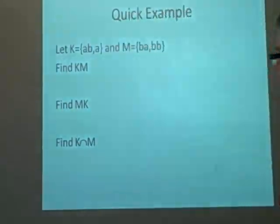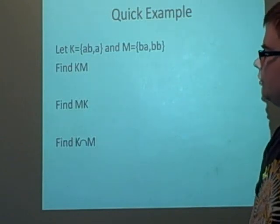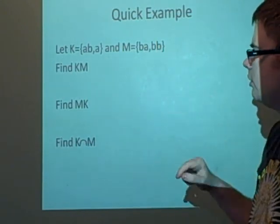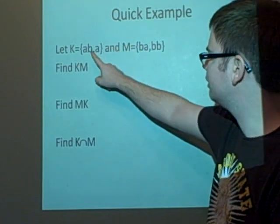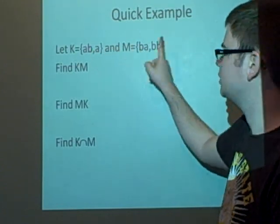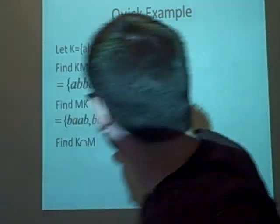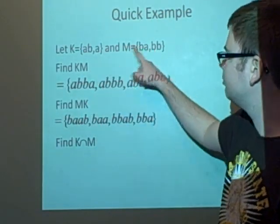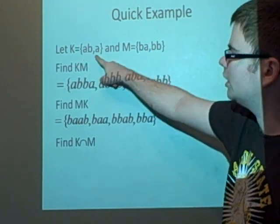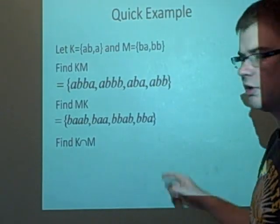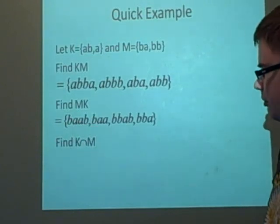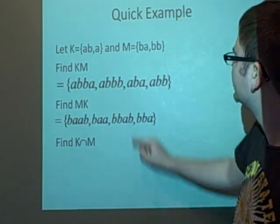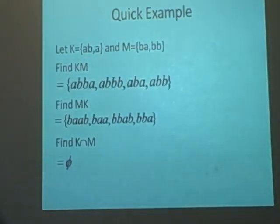Here's a quick example. If we have two languages K and M, where K = {ab, a} and M = {ba, bb}, we want to find KM. We just concatenate everything in K with everything in M: abba, abbb, aba, abb. If we do it the other way around, MK: baab, baa, bbab, bba. We can see that they're not the same. If we want to find K intersect M, we can see none of these are the same, so that's just the empty set.